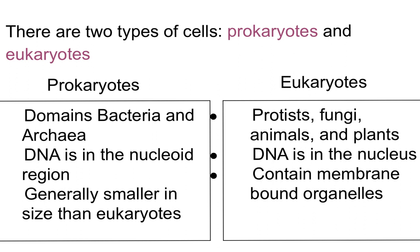Eukaryotes are cells you've been learning about for a long time. They include organisms from the protist group, fungi, animals, and plants. They're special in that their DNA is inside a nucleus contained within a membrane, and they have lots of membrane-bound organelles.